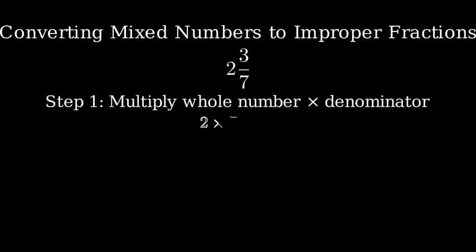Step 1. Multiply the whole number by the denominator. In this case, we multiply 2 times 7. 2 times 7 equals 14.